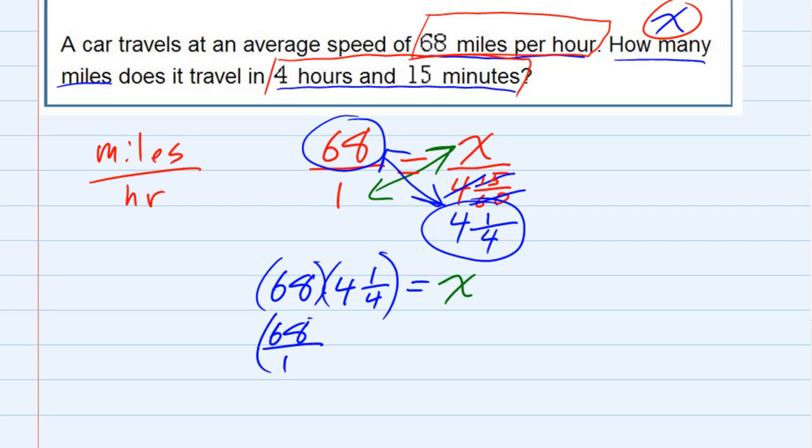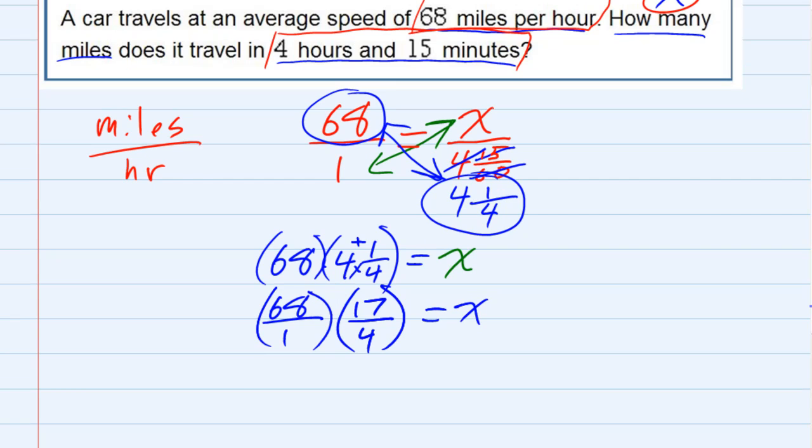and write the mixed number as an improper. So that four times four is 16, plus the one at the top gives me 17 over four. So that's our multiplication.